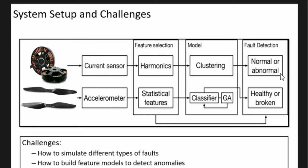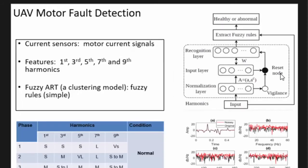For the motor part, we chose the algorithm called fuzzy ART. It's kind of like a combination of fuzzy rules and neural networks. Fuzzy rules are more like a decision tree so you have clear physical meaning about what's going on to determine whether it's good or not.